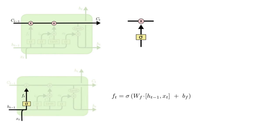The first step in our LSTM is to decide what information we are going to throw away from the cell state. This decision is made by a sigmoid layer called the forget gate layer. It looks at h_{t-1} and x_t and outputs a number between 0 and 1 for each number in the cell state c_{t-1}. A 1 represents completely keep this, while a 0 represents completely get rid of this.